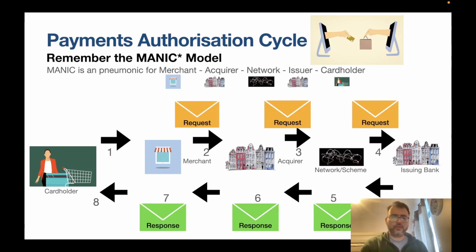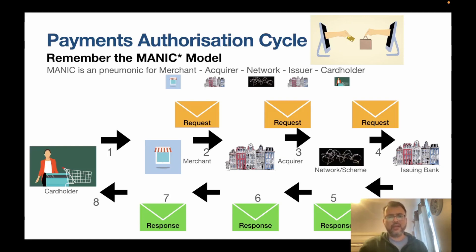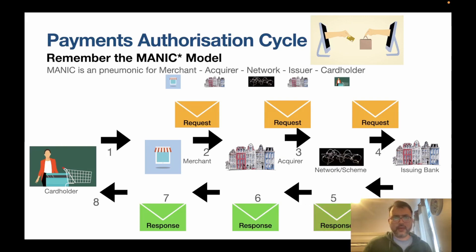The first step is authorization. After that, there is a clearing process that typically happens two, three, or four times a day, where debits and credits are posted to your account and the merchant's account. Then there's settlement, which happens on a T+1 or T+2 cycle, where everything is finalized including any reversals or cancellations.